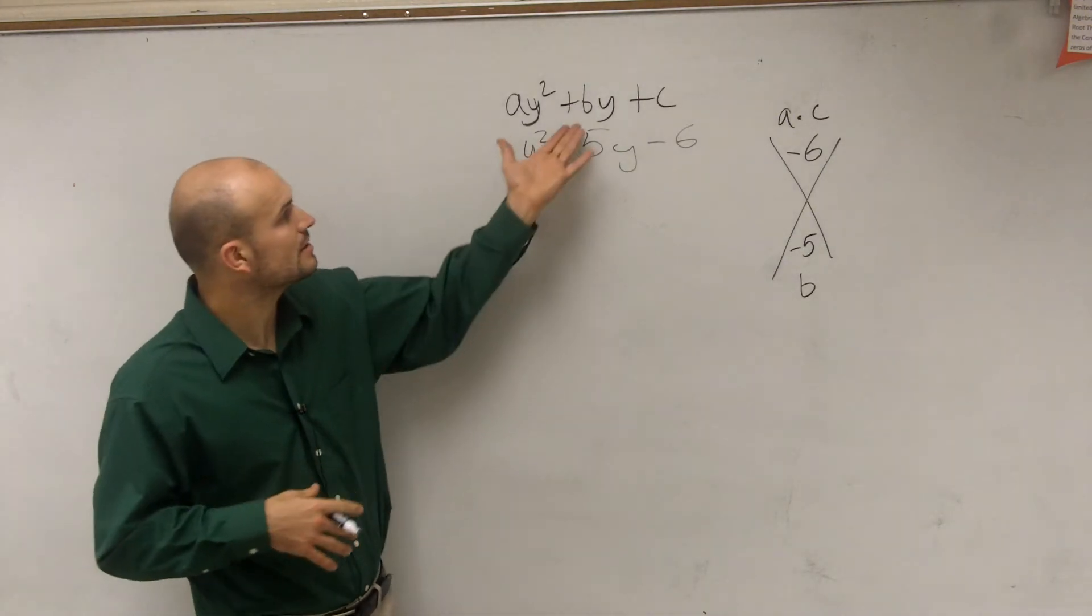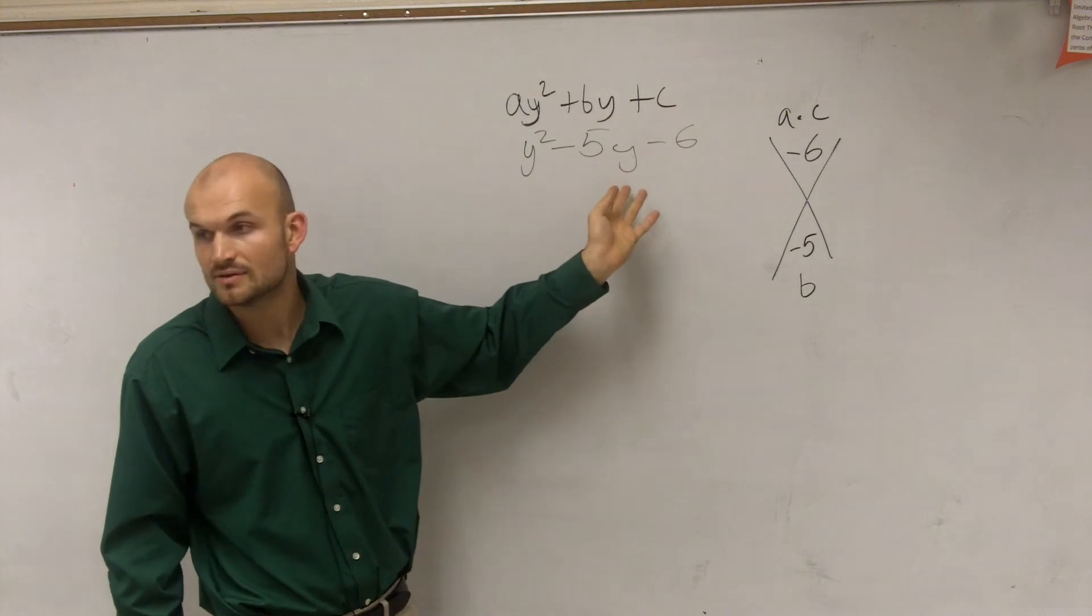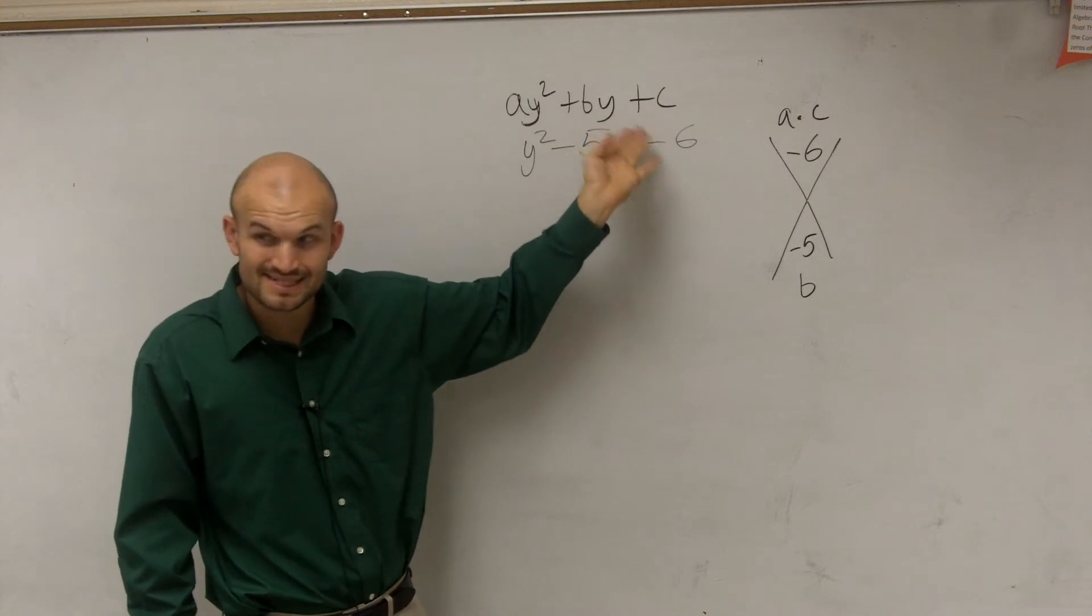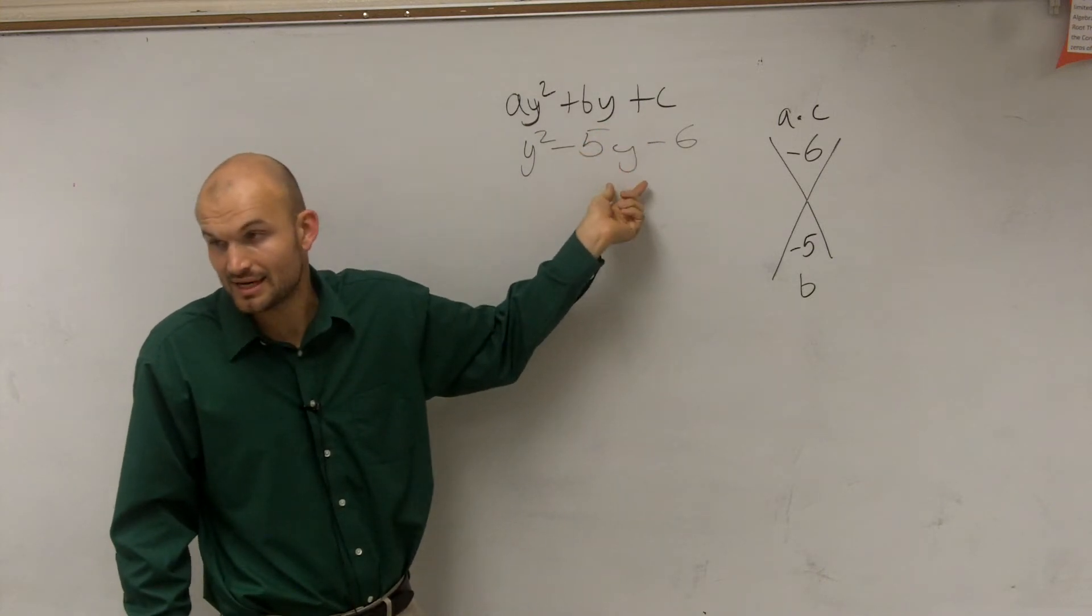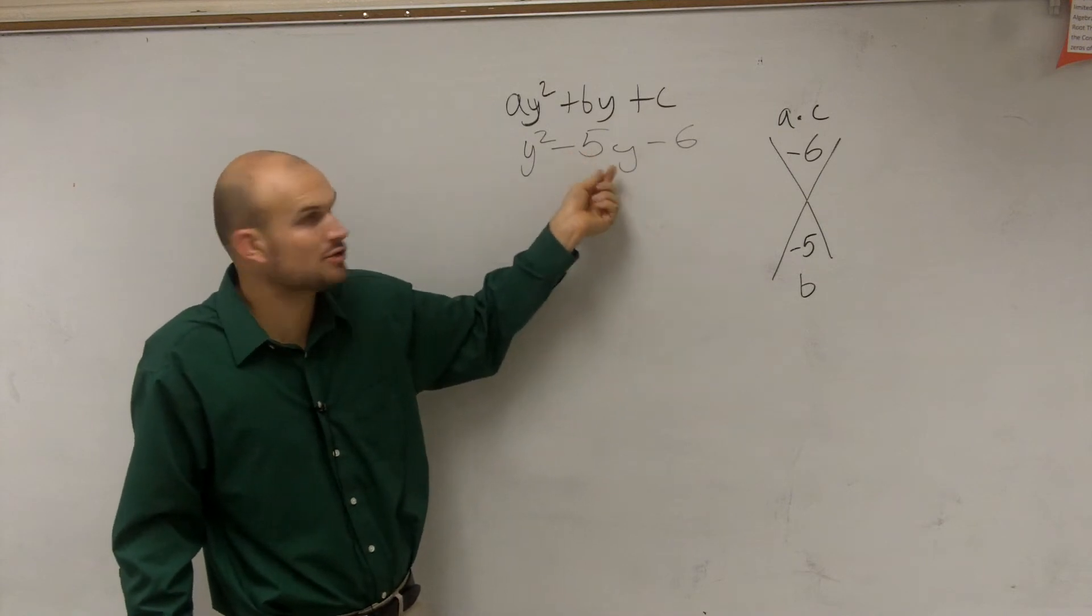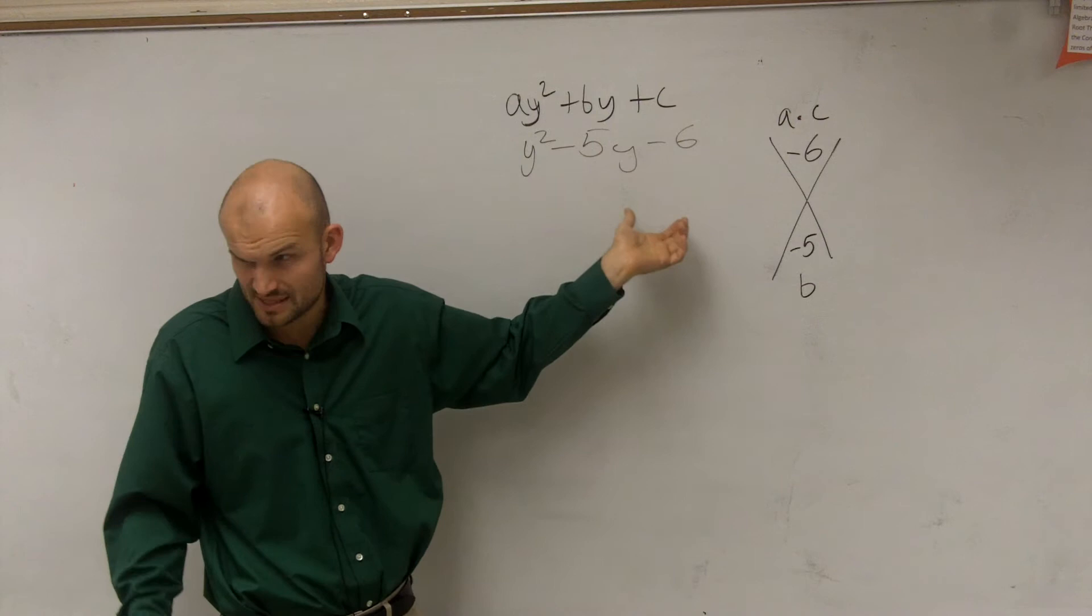So what it says is, it says the value of b. b in this case is negative 5. I'm not changing it, but this is the standard form of the equation. So it's plus b. Well, b is negative, though, right? So it's going to be represented as a minus 5. If b was negative, then it could be plus minus 5, but we just write plus minus 5 as negative 5. Does that make sense?